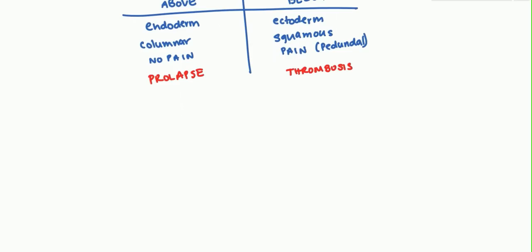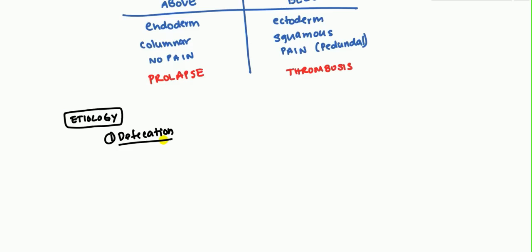Now let's talk about the etiology of hemorrhoids. The first etiology is related to defecation. Patients who have low fiber diets tend to become constipated, and when constipated they strain heavily, which leads to increased abdominal pressure and can engorge the veins of the anal canal. Also, constant diarrhea can agitate the walls of the anal canal, leading to engorgement of the veins.